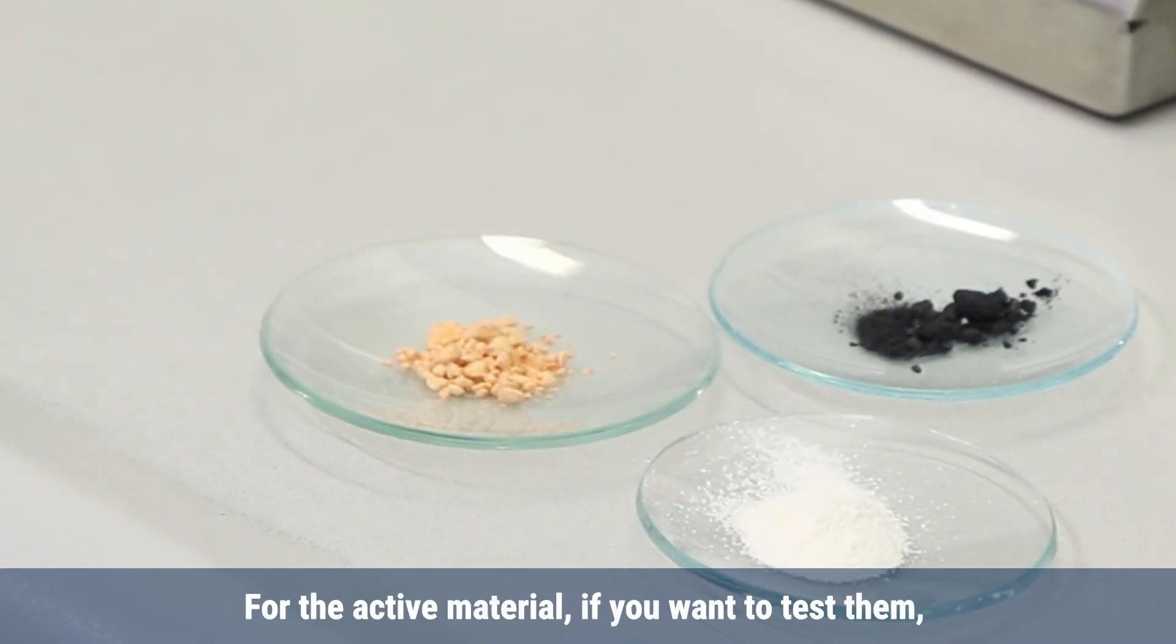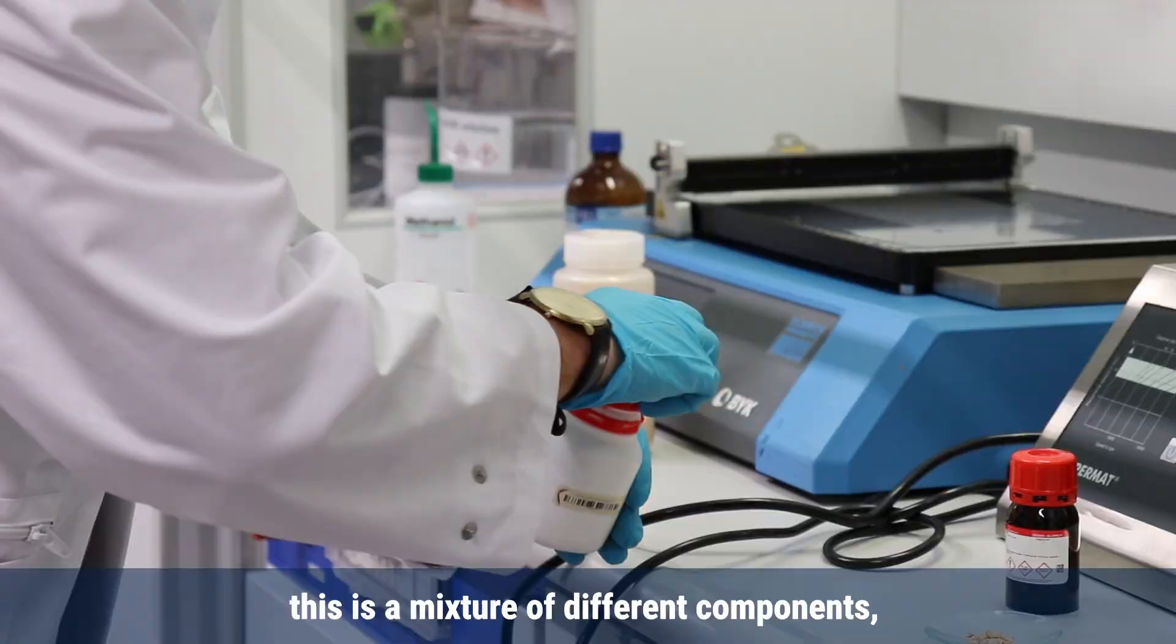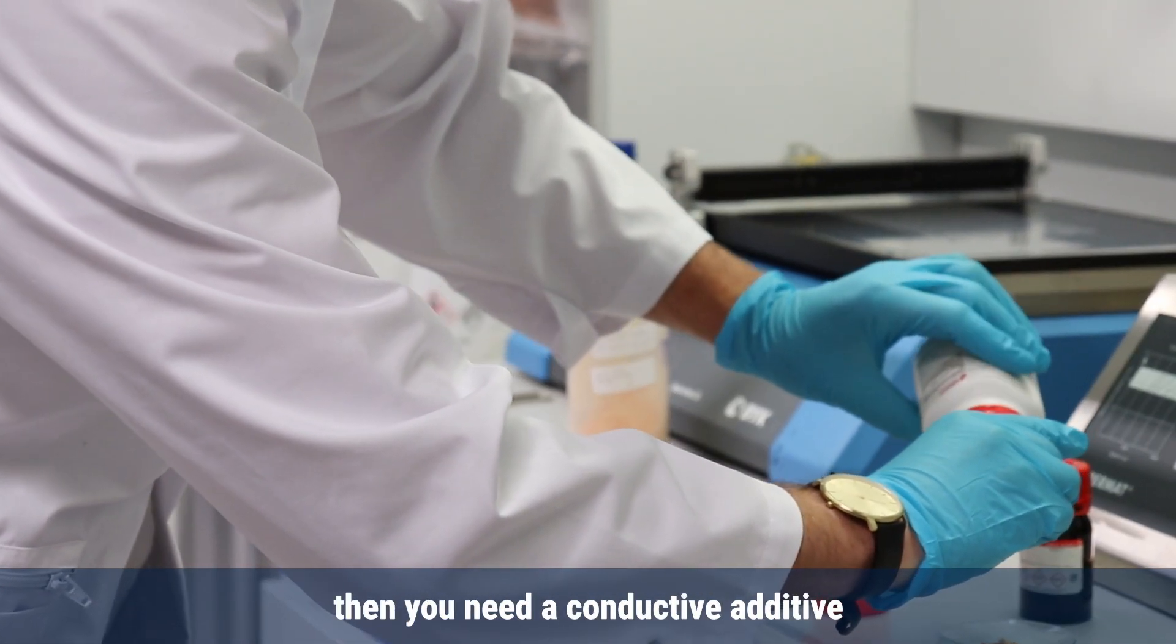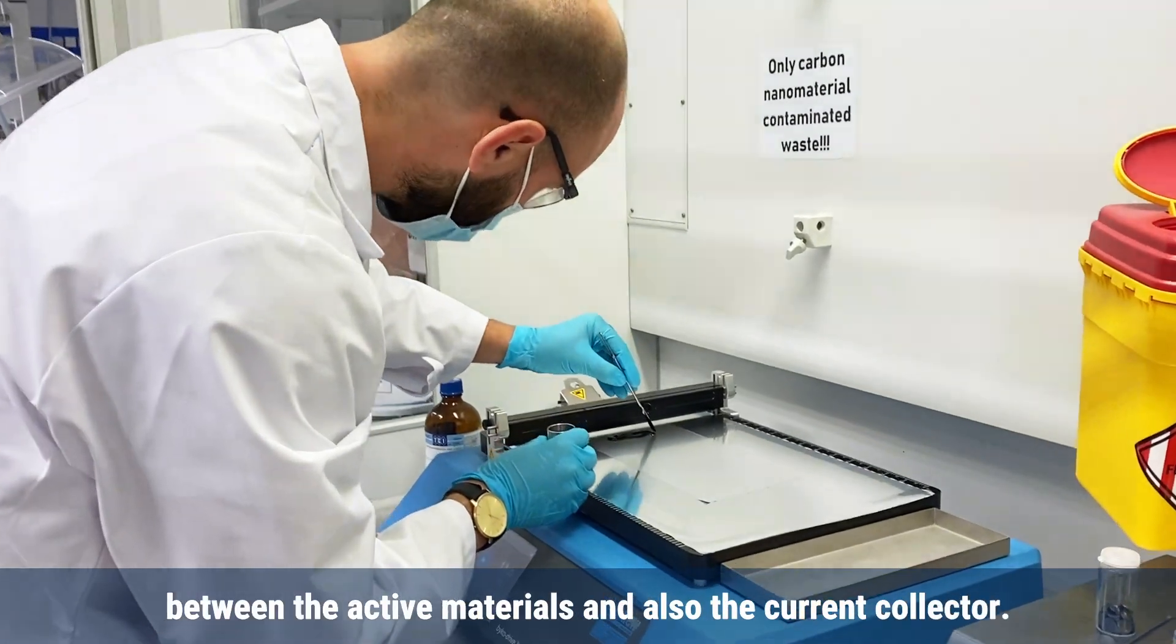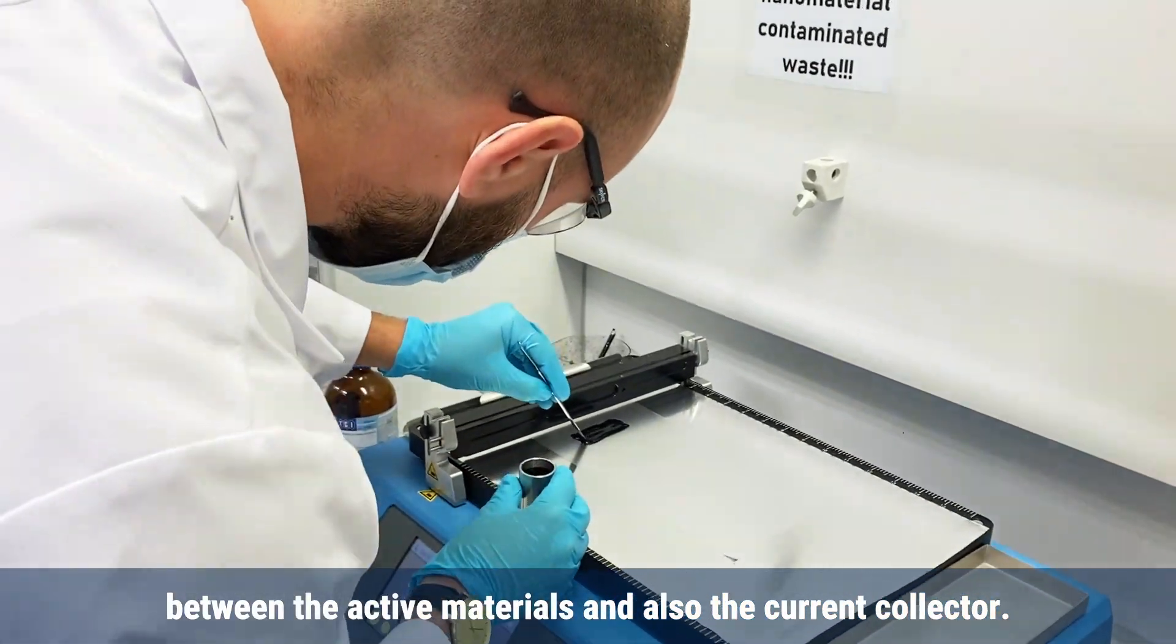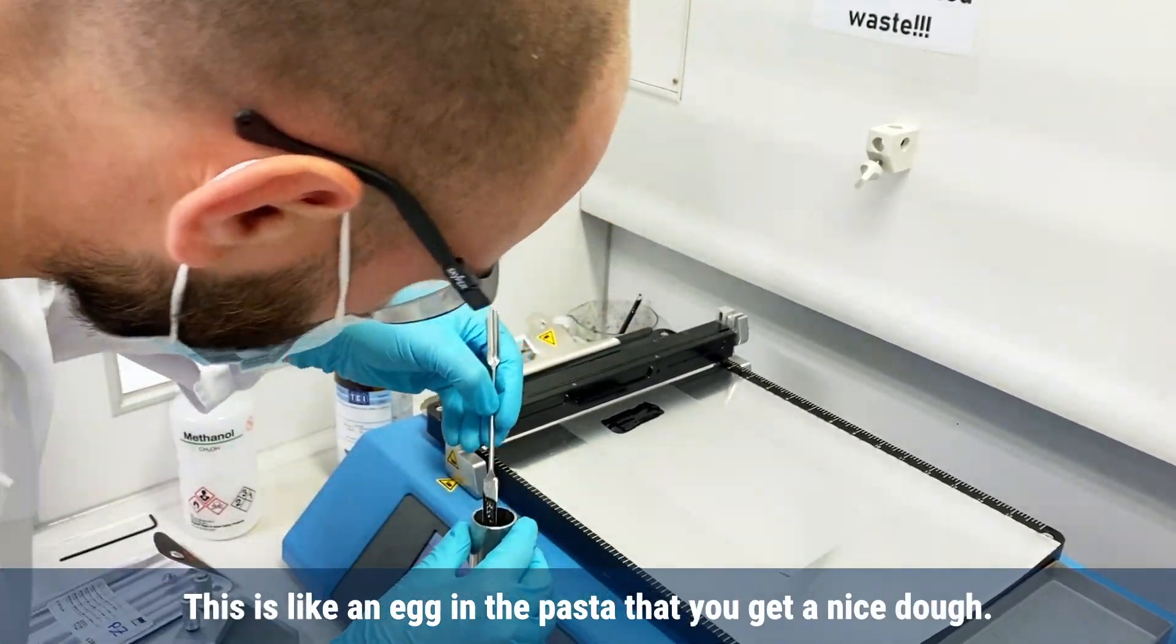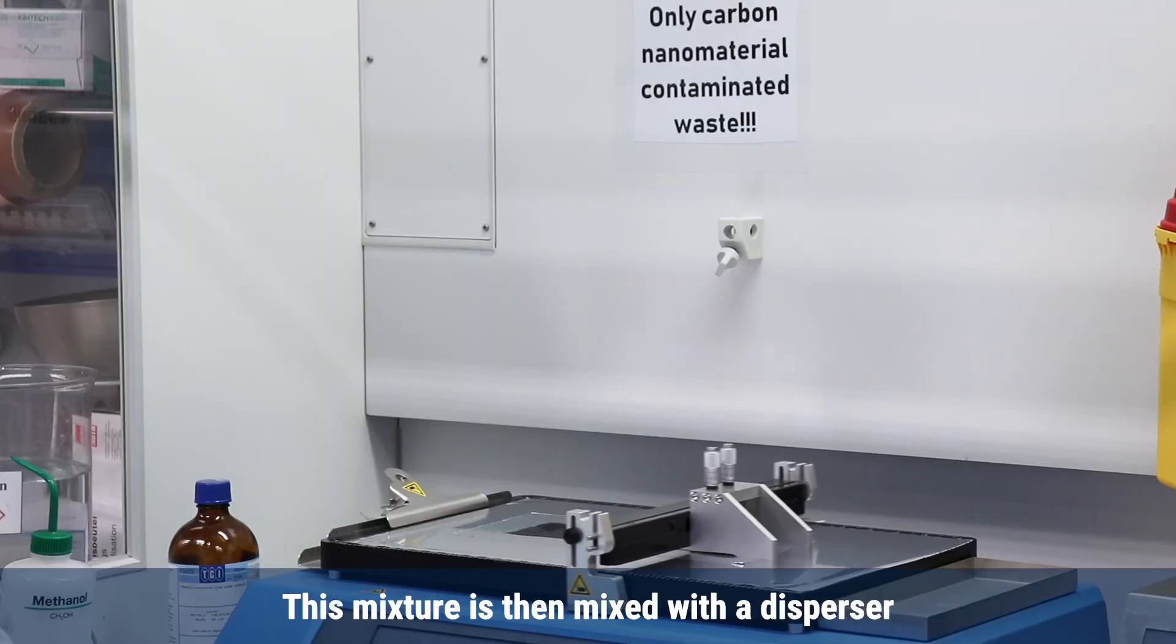For the active material, if you want to test it, we have to do a so-called slurry—a mixture of different components. You need the active material, then you need a conductive additive to transport the electrons between the active materials and the current collector, and to bind everything together you need a polymer, so-called binder. This is like an egg in pasta that gives you a nice dough.